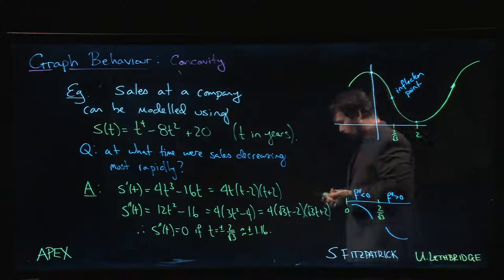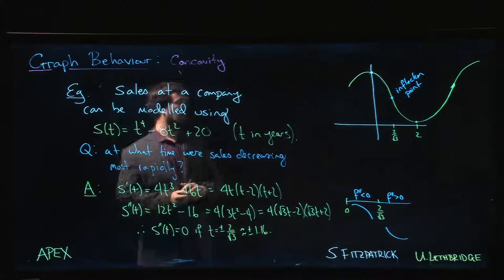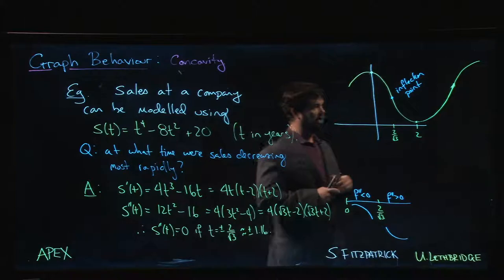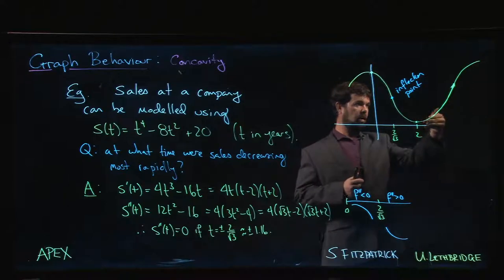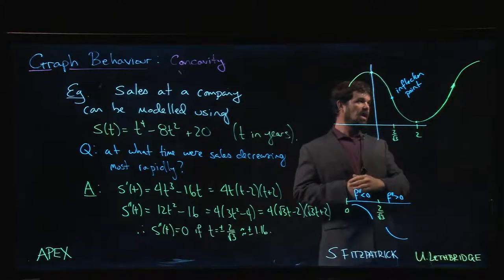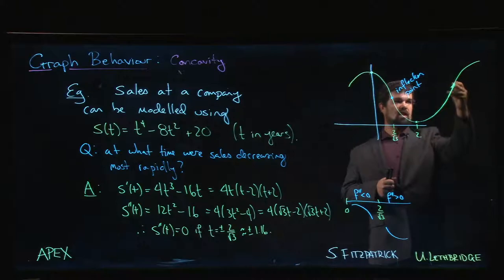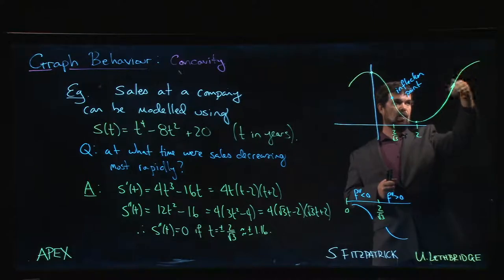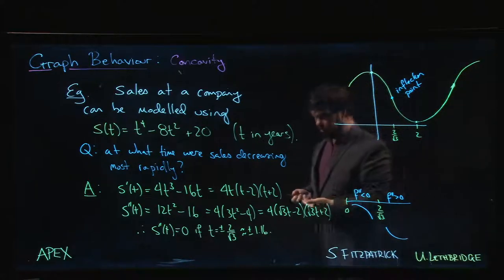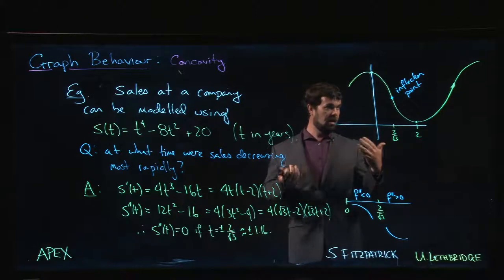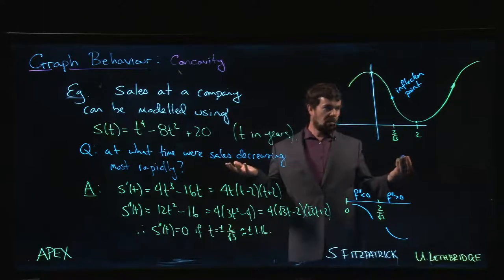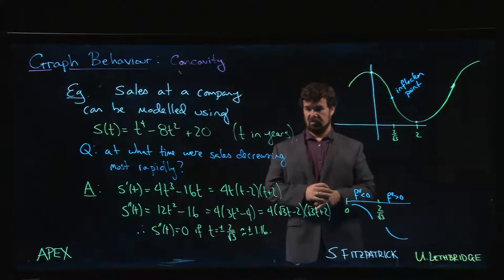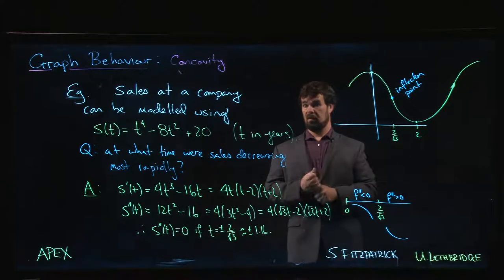We might imagine that maybe the company was doing something here to turn things around, and they're putting more and more resources in. Sales are getting better, they're increasing, increasing. And then there's this point at which, well they're still pumping resources in, but the rate at which sales are increasing starts to drop off. This can sometimes be referred to as a point of diminishing returns. So that's another way of thinking about inflection points - this idea of a point of diminishing returns. That's one way of thinking about inflection points in context. You'll probably come across others as well.